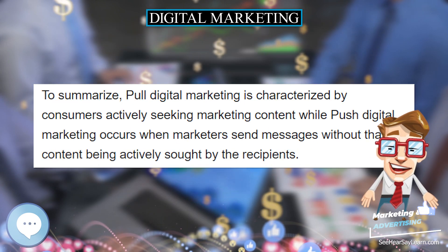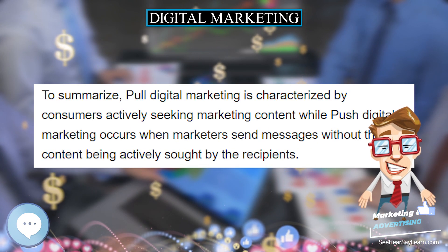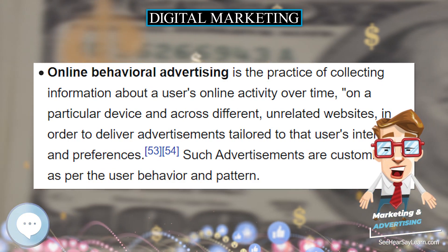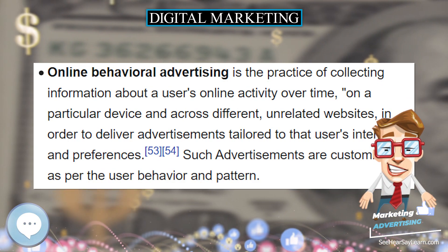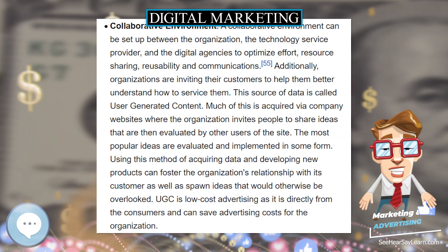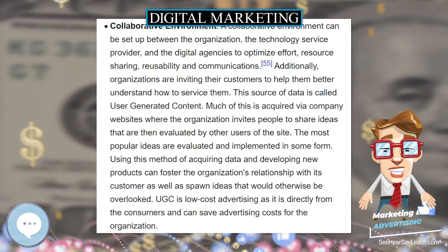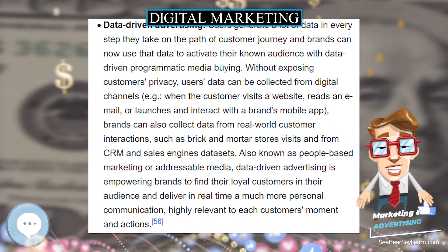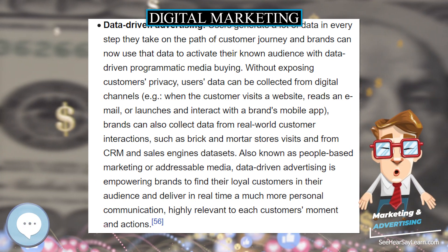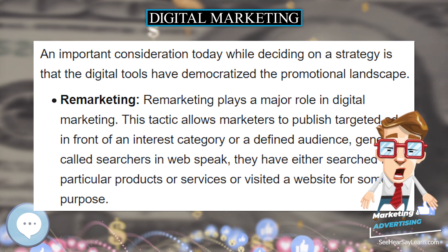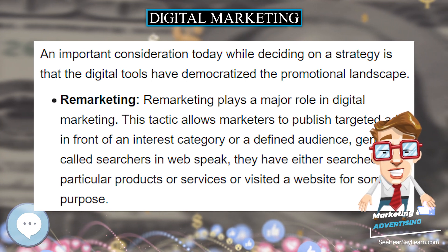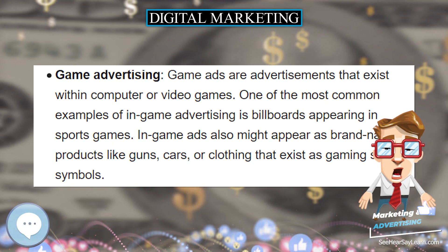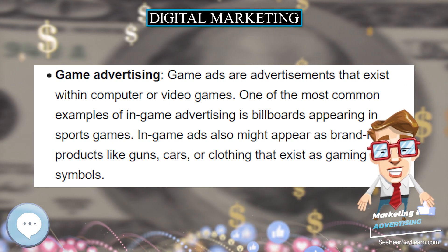Digital marketing planning is a term used in marketing management. It describes the first stage of forming a digital marketing strategy for the wider digital marketing system. The difference between digital and traditional marketing planning is that it uses digitally based communication tools and technology such as social, web, mobile, and scannable surface. Nevertheless, both are aligned with the vision, the mission of the company, and the overarching business strategy.